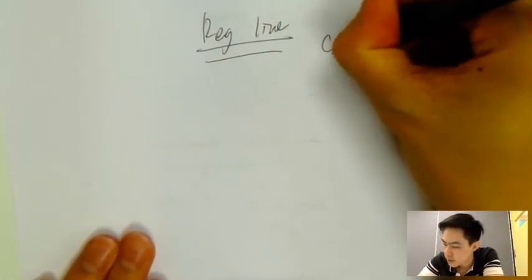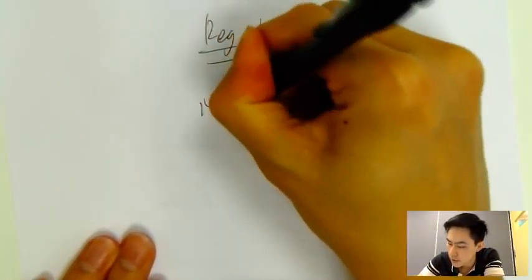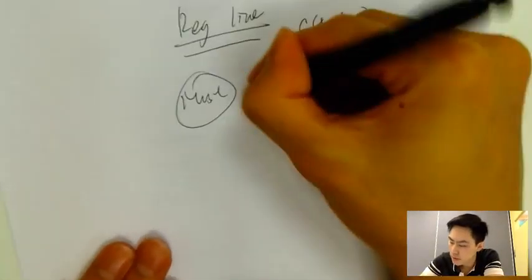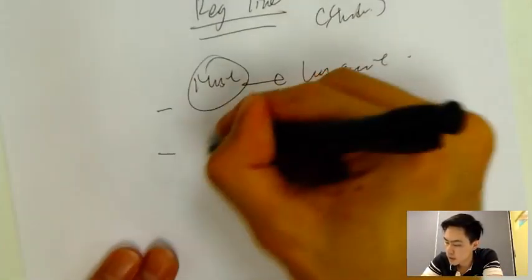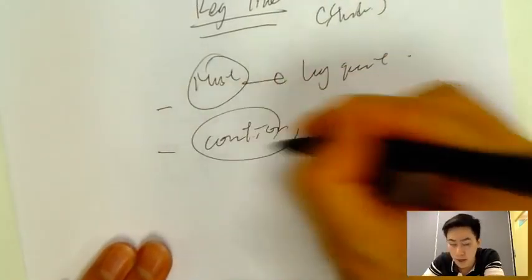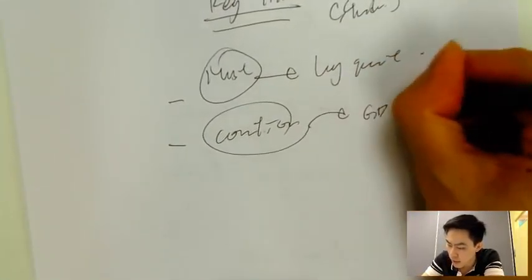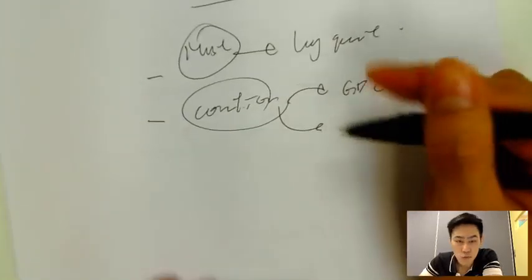Regression line questions in math studies - this is a must question type in your IB exam, especially the long question type. You'll see questions related to correlation: what does it mean by correlation, and how to use your GDC to calculate that.